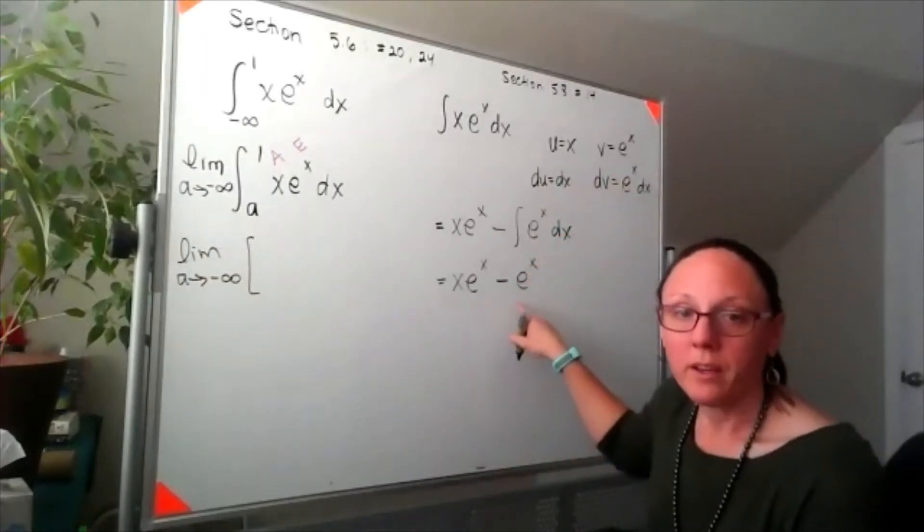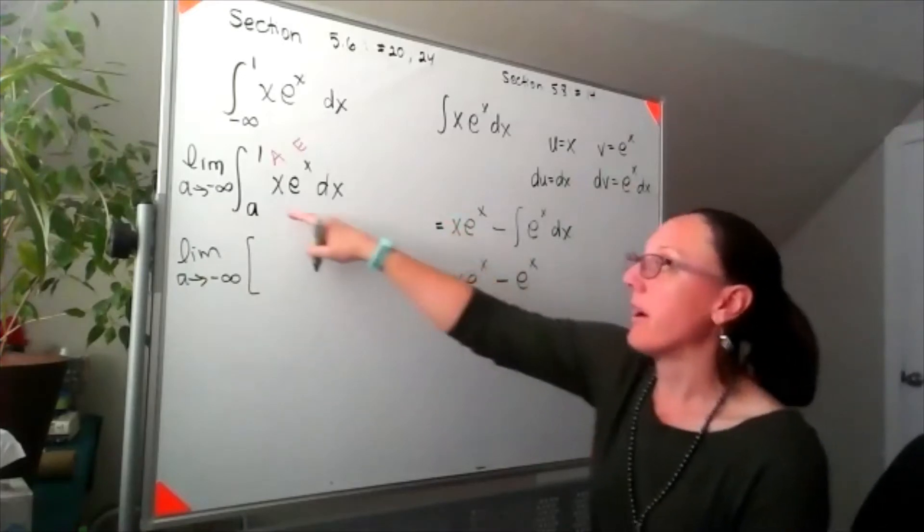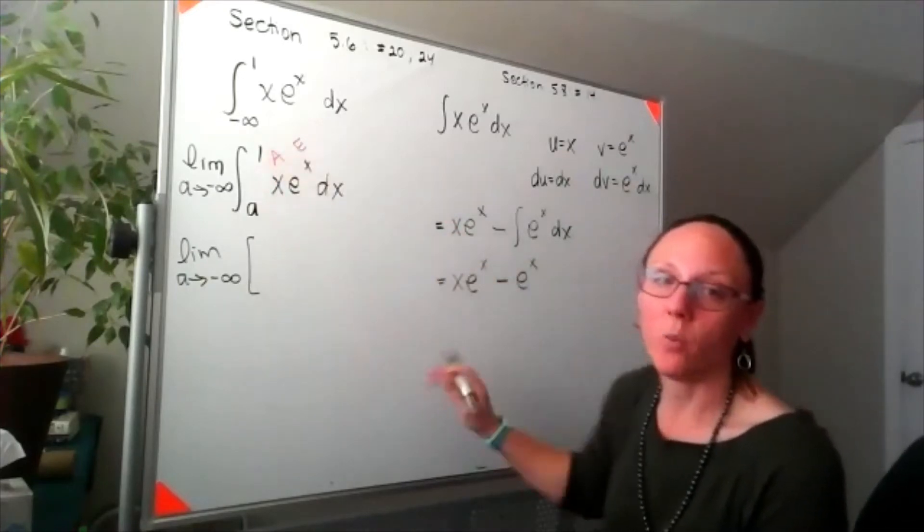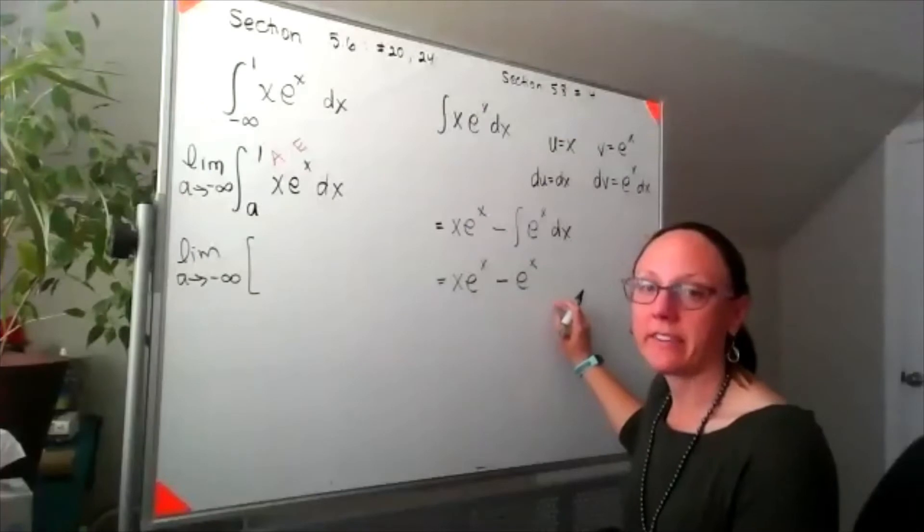When we're doing integration by parts, it's important to note that we're plugging in these bounds of a and 1 to the entire antiderivative.